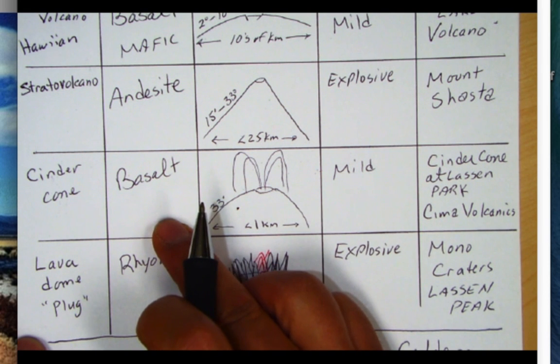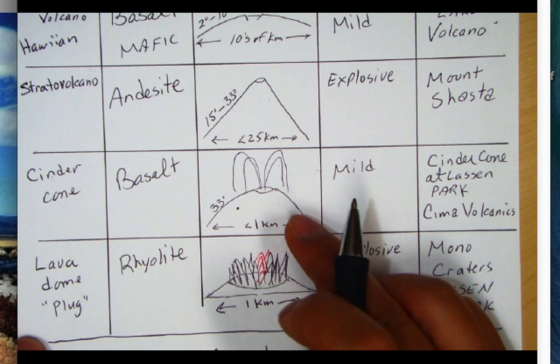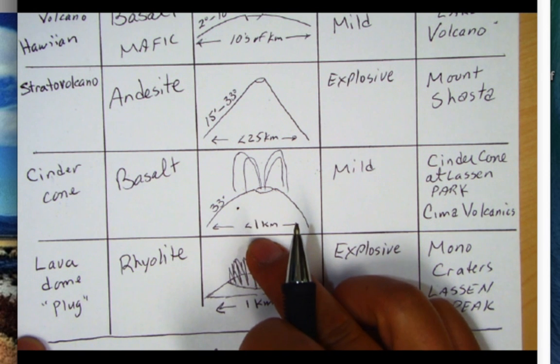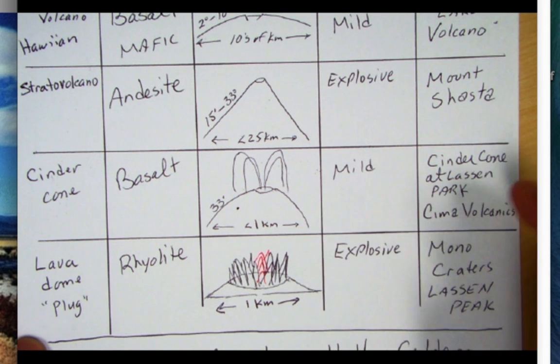Mafic basalt most of these and note that we're going to have a slope angle of 33 degrees, quarter kilometer to a kilometer, something less than a kilometer in basal diameter, mild eruptions. There's Cinder Cone at Lassen and then several cinder cones over at the SEMA volcanic field.